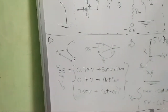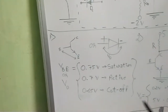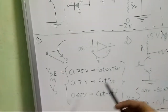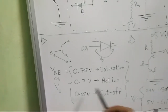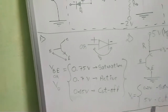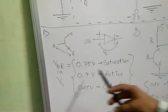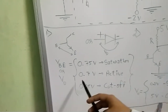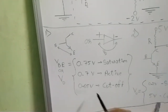First, the voltage across the base-emitter junction of a transistor depends on its region: when the transistor is in saturation, VBE is 0.75V; in active region it is 0.7V; and in cutoff region it is 0.65V. The same applies to a diode — 0.75V in saturation, 0.7V in active region, and 0.65V in cutoff region.